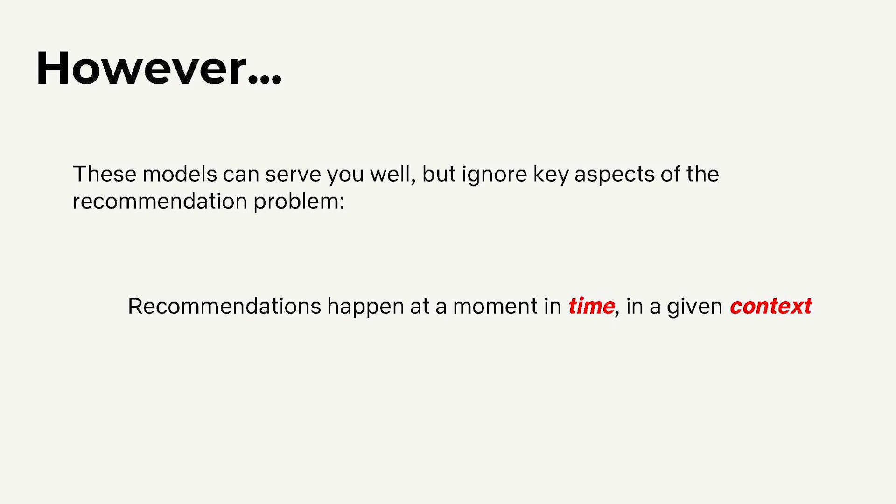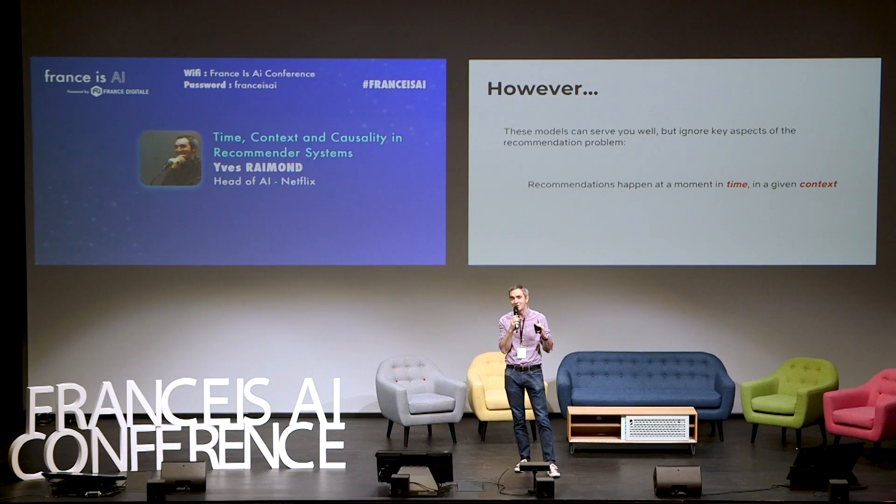However, these models are bounded in how predictive they can be because they miss two key parts of the recommendation problem. One, you might want to serve different recommendations at different times — for example, different recommendations for someone commuting in the morning versus someone sitting in front of the TV in the living room. Similarly, they are not aware of context, so there is no way to inject extra information that could help provide better recommendations.